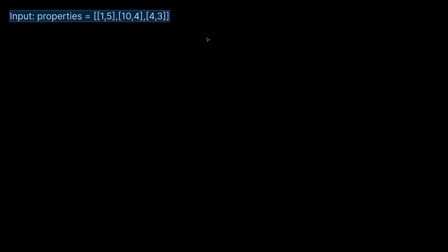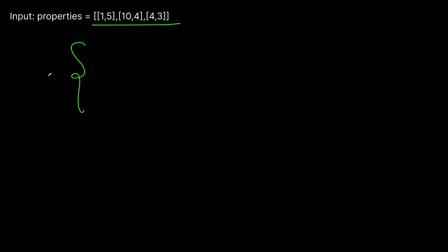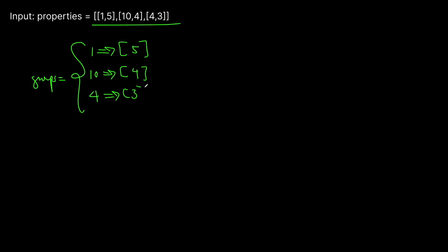The solution we're going to use is called bucket sort, although it doesn't really involve any traditional sorting. We want to group all of our characters into buckets using a hash map. The key of the hash map is going to be the attack value, so we bucket every character by their attack value. For example: attack 1 maps to defense 5, attack 10 maps to defense 4, and attack 4 maps to defense 3. We build this hash map by iterating over our properties from left to right.